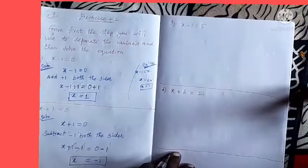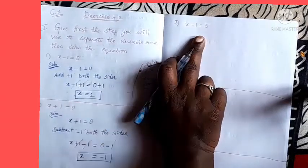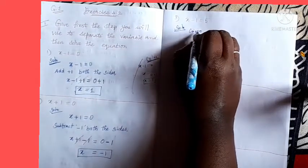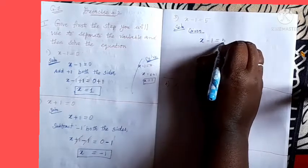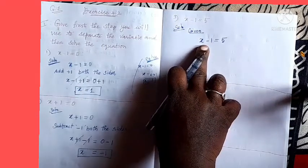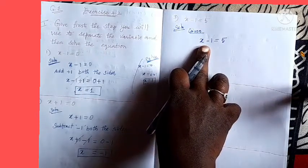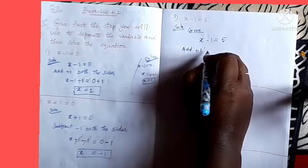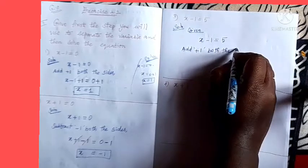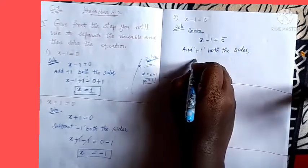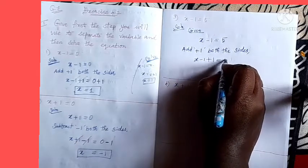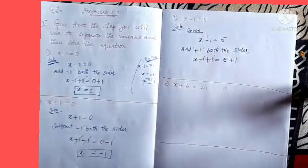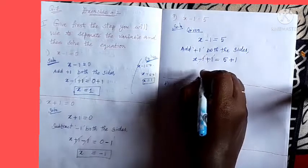Third question: x minus 1 equal to 5. Write the question as given. Here minus 1 is given, so take the opposite sign, which is plus 1. Add plus 1 on both sides: x minus 1 plus 1 equal to 5 plus 1. Minus 1 and plus 1 cancel, so x equal to 5 plus 1, which is 6.